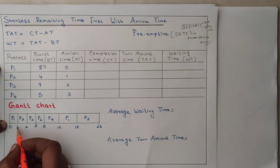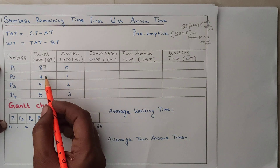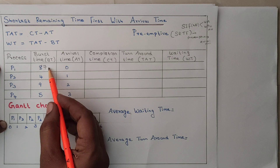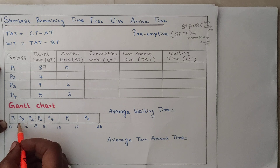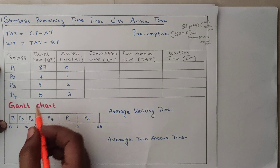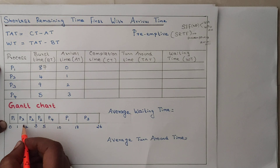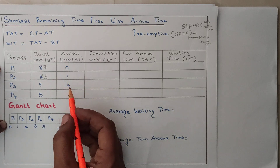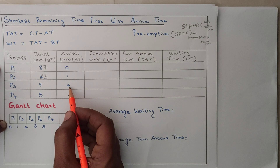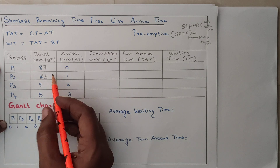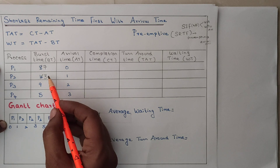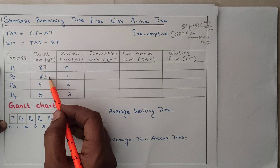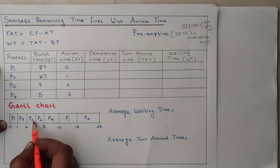At 1st millisecond, process P2 arrives. Now check the burst times: P2 has burst time 4, P1 has burst time 7. P2 is shorter, so P2 starts executing. The next arrival is at 2nd millisecond, so P2 works for 1 millisecond — still 3 milliseconds of job left. At 2nd millisecond, P3 arrives. Check burst times: P3 is 9, P2 is 3, P1 is 7 — P2 is still shortest.